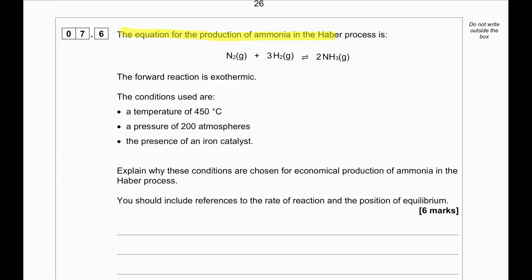The equation for the production of ammonia in the Haber process is nitrogen reacting with hydrogen to produce ammonia. The forward reaction is exothermic, and whenever the forward reaction is exothermic, the backward reaction will be endothermic.